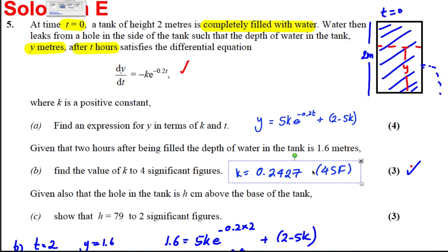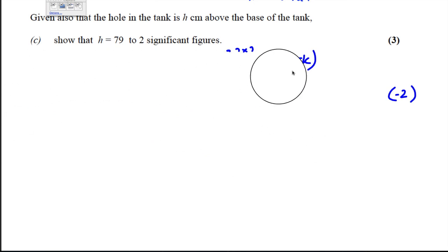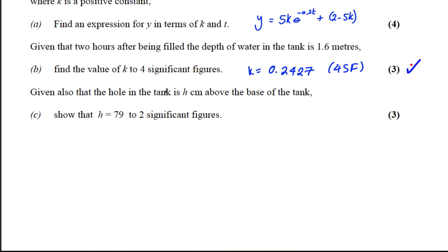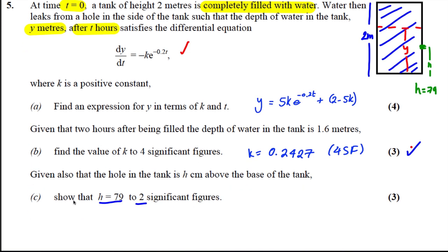Now we're told the hole in the tank is h centimetres above the base and asked to show that h = 79 to two significant figures. Going back to our picture: the hole is some height h above the base. When y approaches h, the water level stops changing because no water will flow out when it's level with the hole. So by this model, as t tends to infinity, y tends to h.